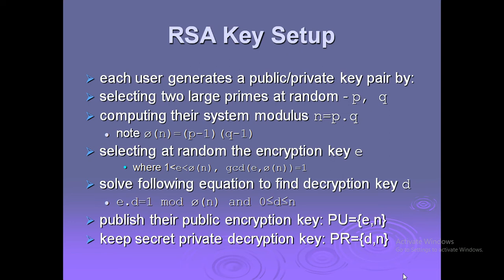Select e such that e > 1, e < phi(n), and gcd(e, phi(n)) = 1. Solve the equation e·d ≡ 1 mod phi(n) to find the decryption key d, where d = e⁻¹ mod phi(n), and 0 ≤ d ≤ n. Publish the public encryption key PU = {e, n} and keep secret the private decryption key PR = {d, n}.